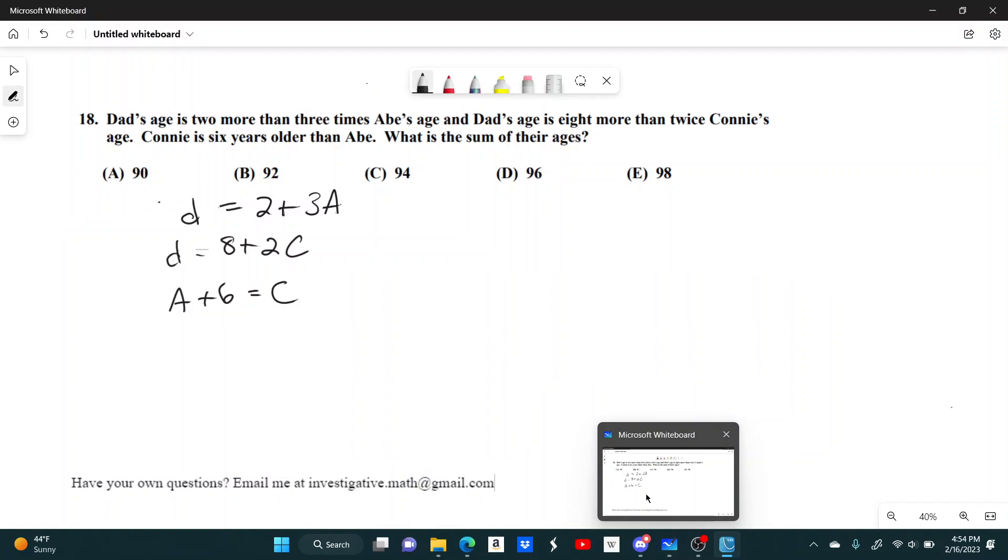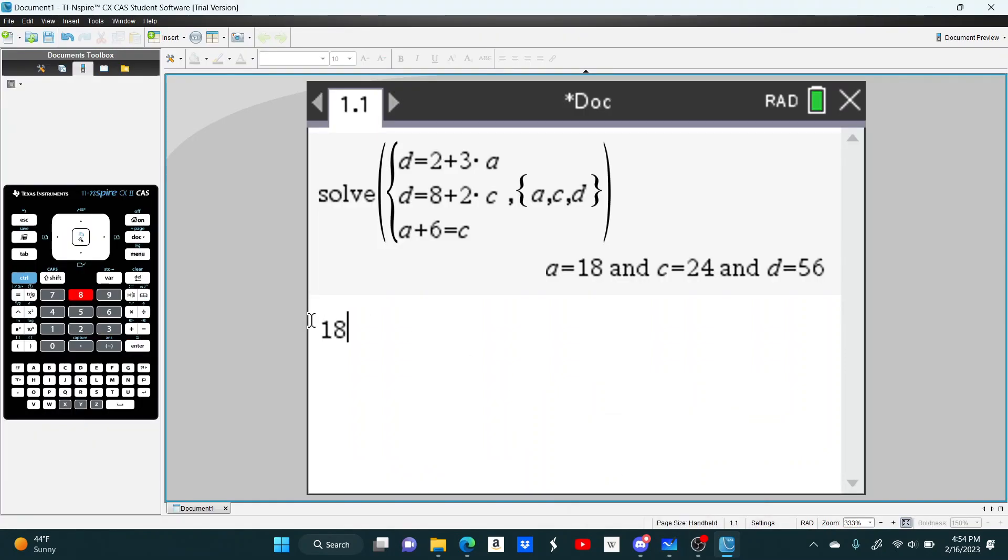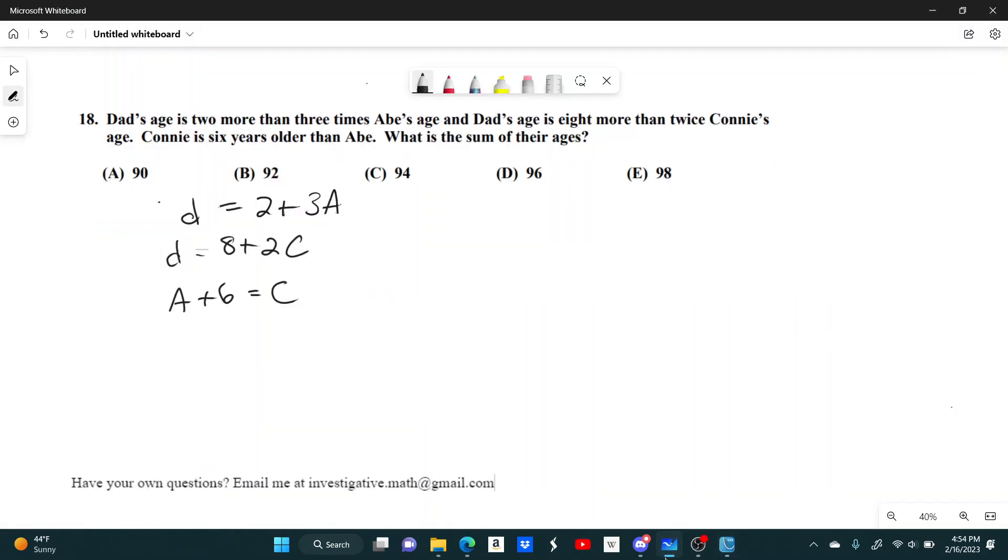So let's remember what they're actually asking for. The sum of their ages. Okay, that's pretty easy. So 18 plus 24 plus 56 gives us 98. And that's answer choice E.